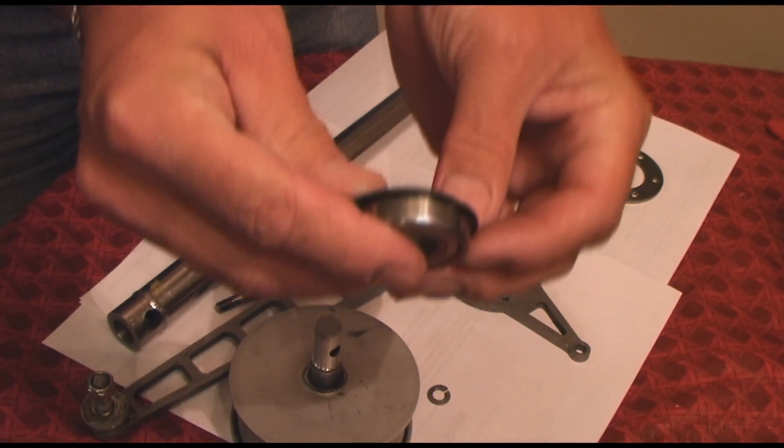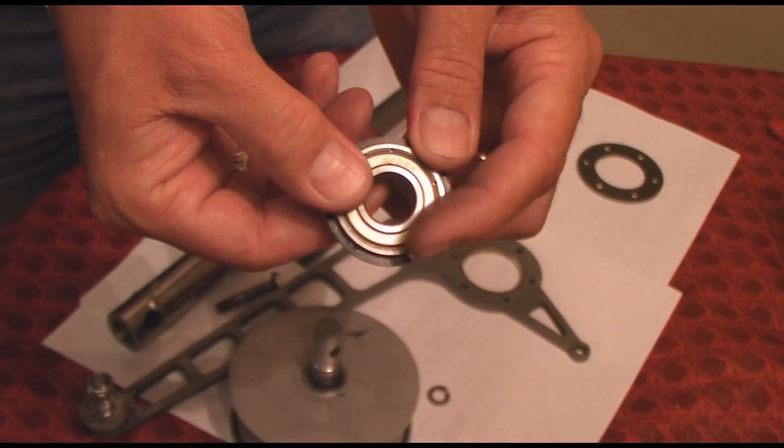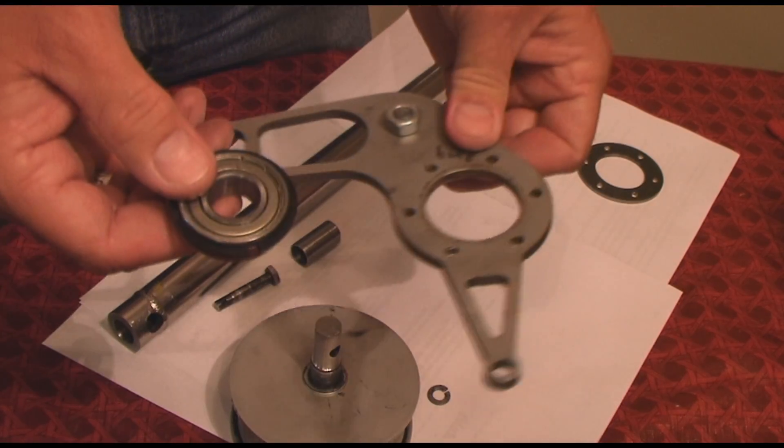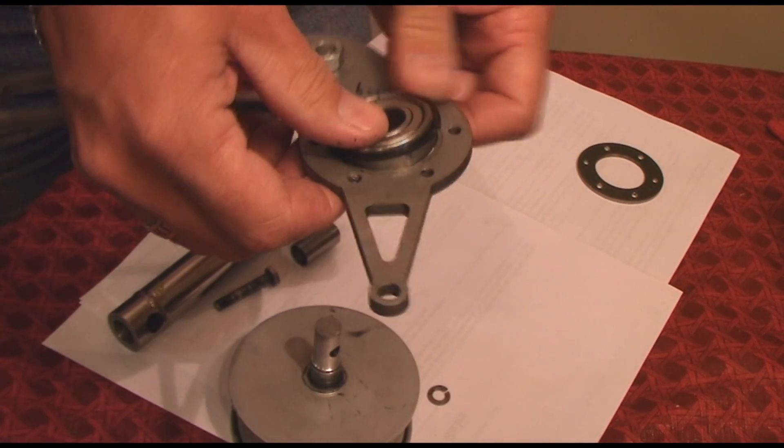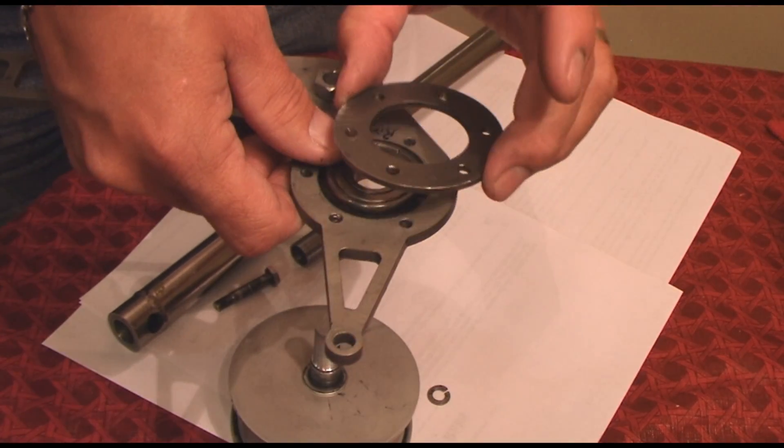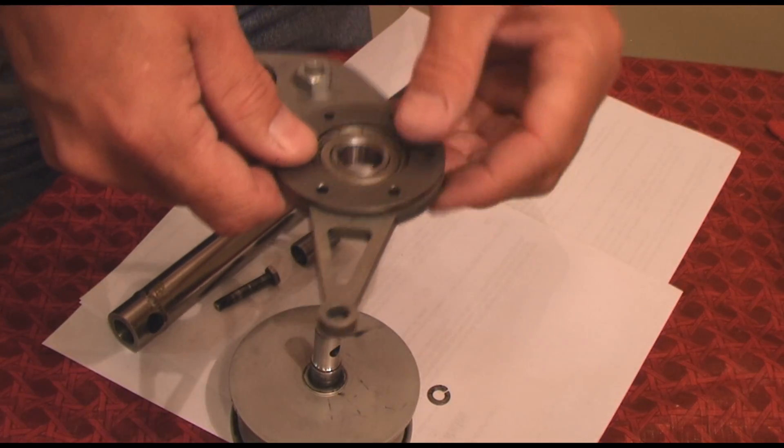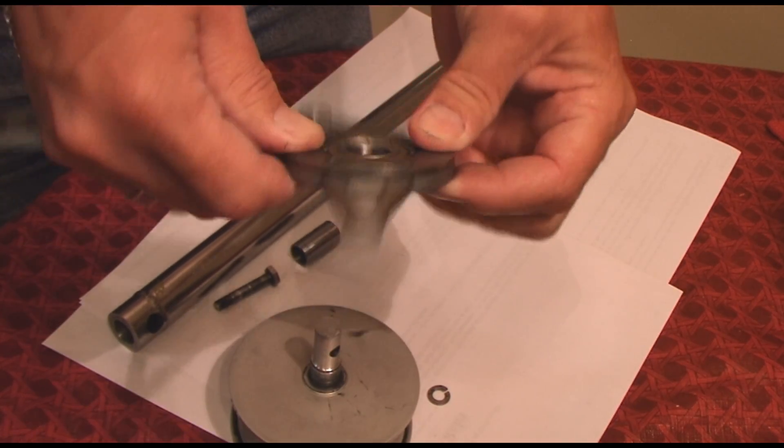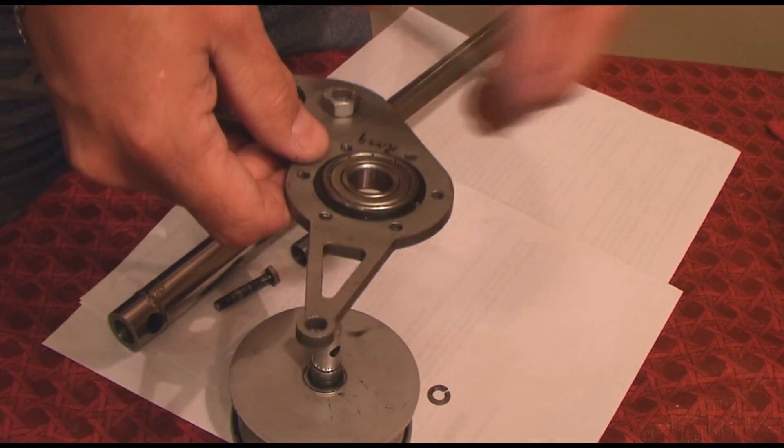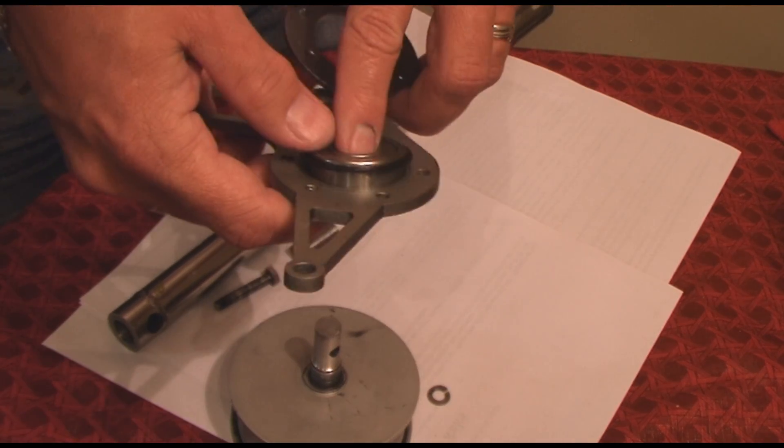You can see it's got a split clip on it right there. It fits into the aluminum control arm and then a special steel plate goes over the top of it and sandwiches between the snap ring on the bearing to hold it in place so it doesn't slop out or come out. It's not pressed in.